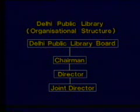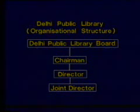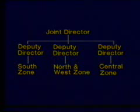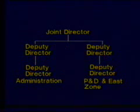In order to understand the different functions of the Delhi Public Library, we are showing you the organizational structure. The library board has a chairman under whom the director is the executive head. He is supported by a joint director and five deputy directors. The deputy directors are in charge of different zones of the Union Territory of Delhi and one director is in charge of administration.